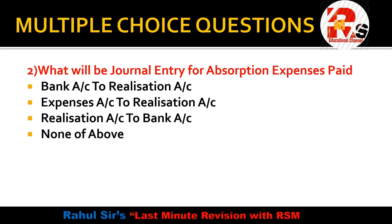Question 2: What will be the journal entry for absorption expenses paid? This can also be called liquidation expenses. The options are: bank to realization, expenses to realization, realization to bank, or none of the above. The correct entry is Realization Account debit to Bank Account. If you have any expenses to pay, the entry is Realization Account debit to Bank Account.